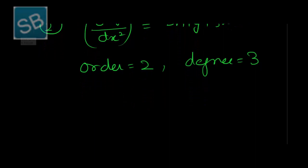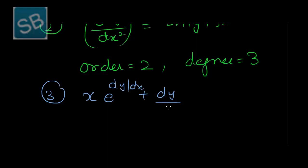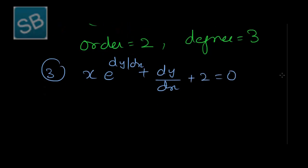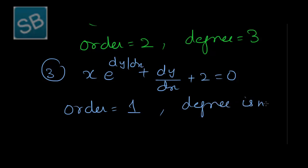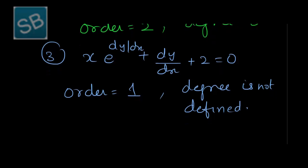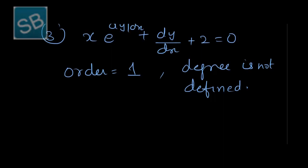The third differential equation is x·e^(dy/dx) + dy/dx + 2 = 0. Here the order is 1 because the only derivative present is dy/dx. However, the degree is not defined because this equation is not in polynomial form — the derivative appears as an exponent. To define the degree, the equation must be in polynomial form.